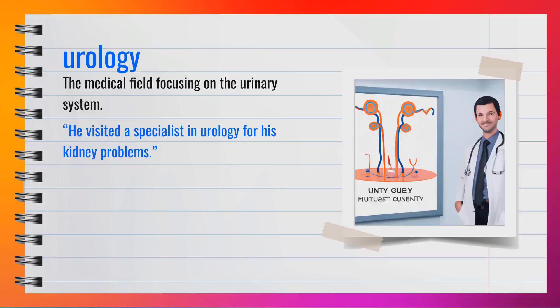The word urology, spelled U-R-O-L-O-G-Y, is a noun. It refers to the medical field focusing on the urinary system. For example, he visited a specialist in urology for his kidney problems. Urology covers conditions related to the kidneys, bladder, and more. In summary, urology is the branch of medicine that deals with the urinary system.